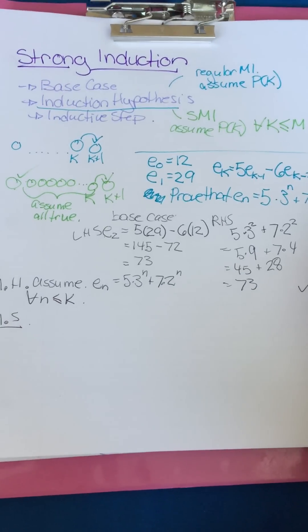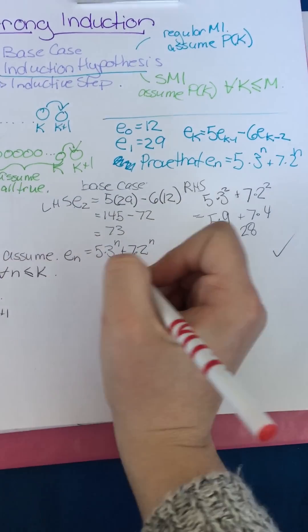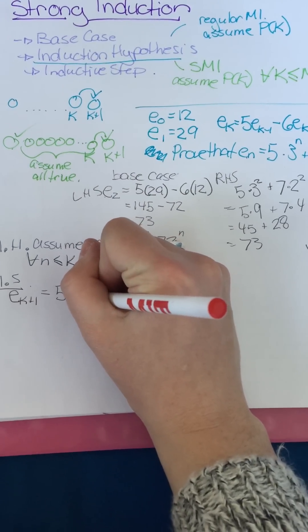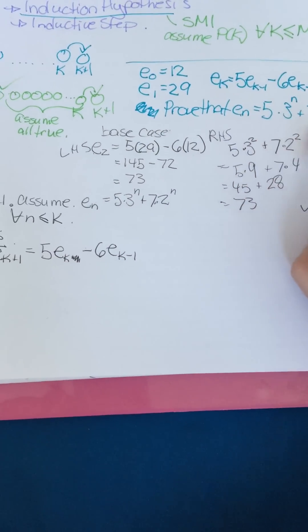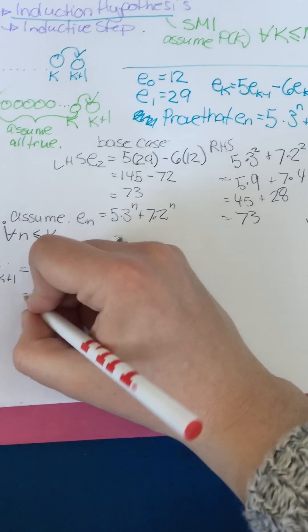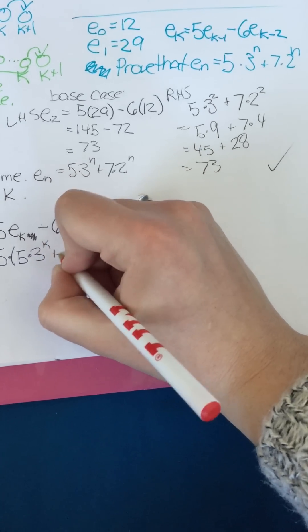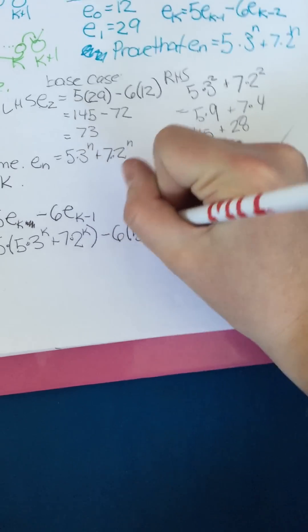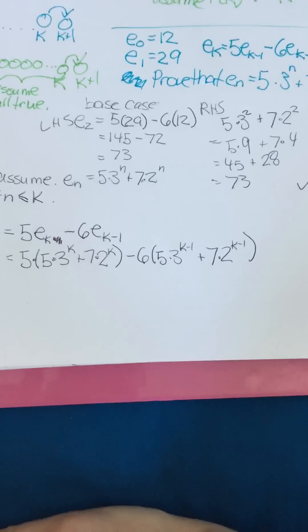Now the inductive step. We write Eₖ₊₁ = 5·Eₖ − 6·Eₖ₋₁, since k+1−1=k and k+1−2=k−1. By the induction hypothesis, we substitute to get: 5·(5·3ᵏ + 7·2ᵏ) − 6·(5·3ᵏ⁻¹ + 7·2ᵏ⁻¹).